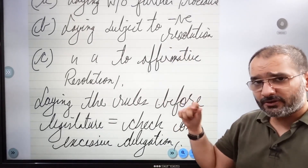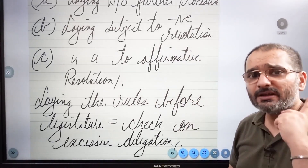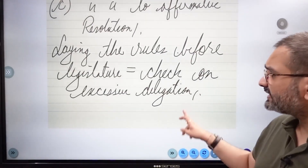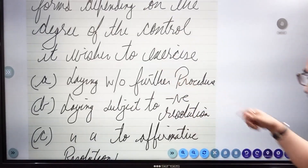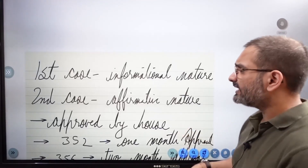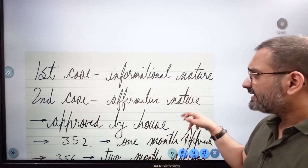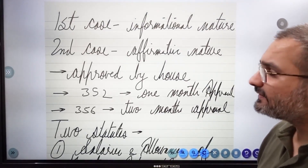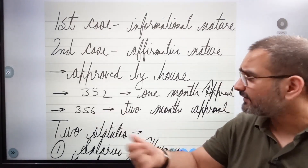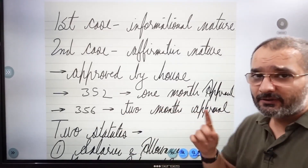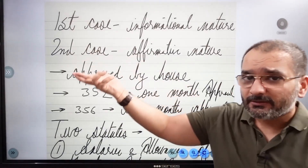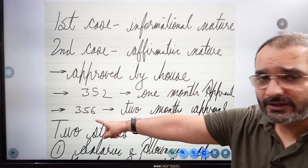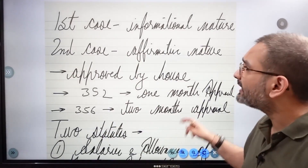Laying the rules before the legislature is basically a way of checking on excessive delegation. The first type is purely informational or salutary in nature. The second — which you should include in your answer — is the affirmative resolution: it has to be approved by the house. For example, under Article 352, a proclamation of national emergency has a one-month approval window — it comes into effect as soon as proclaimed but must be approved by parliament. Similarly, President's Rule under Article 356 has a two-month approval window.